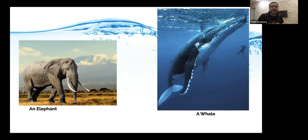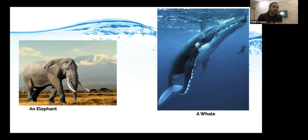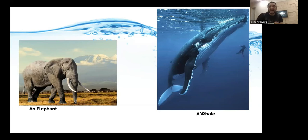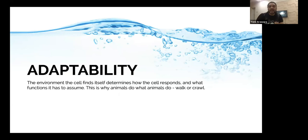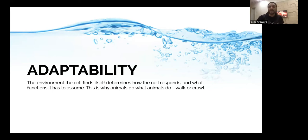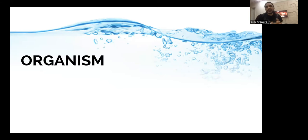So that brings me back to the first question: why do the cells in an elephant come together to form the elephant, and why do the cells in a whale come together to form the whale? Why don't elephant cells form whales? The answer is simple: it's adaptability. The environment that the cell finds itself in actually determines how the cell responds and what functions it has to assume. The environment plays a critical role in how we function and how we become who we are. This is also why most fish swim.